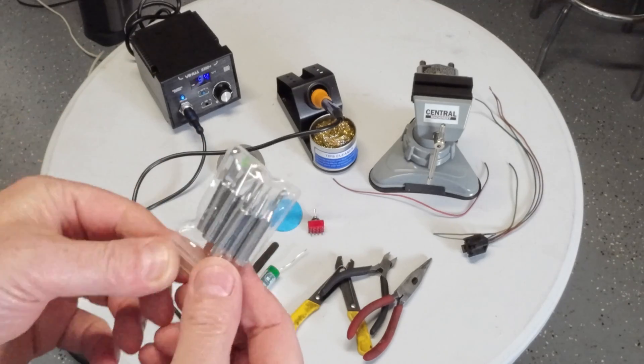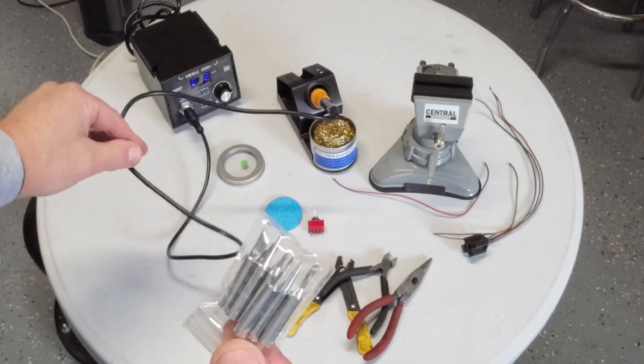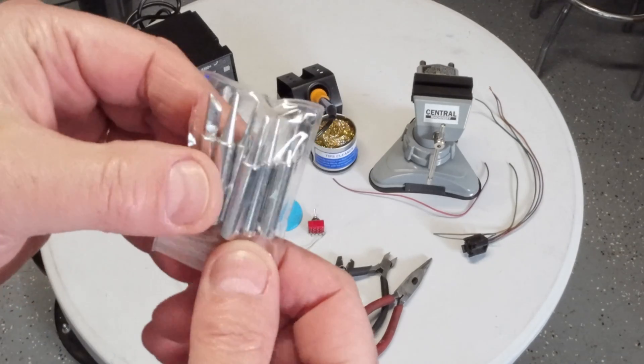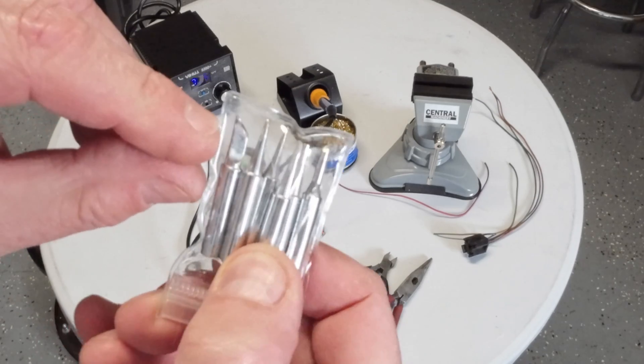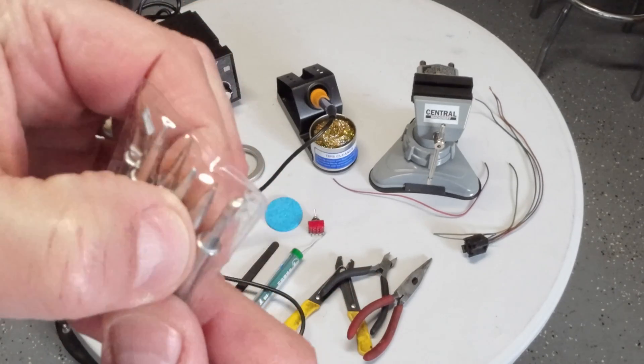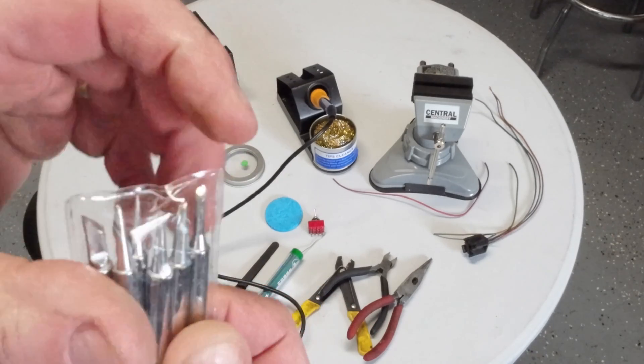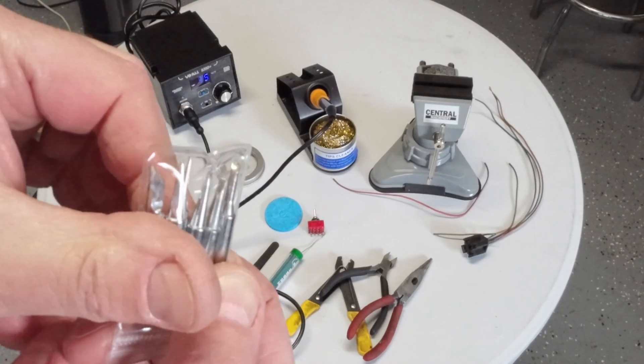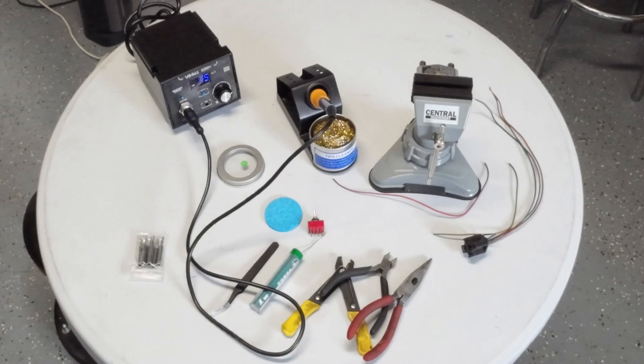This more complex soldering iron does come with some tips that are changeable. You can see there's a larger tip, a fine point, a smooth edge, and then a couple of flat edges in there. Basically, the right tip for what you're working on. We're just going to be soldering some wires, so it's not super important what sort of tip it is.